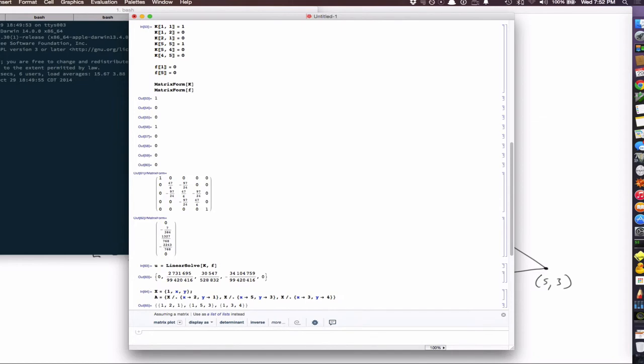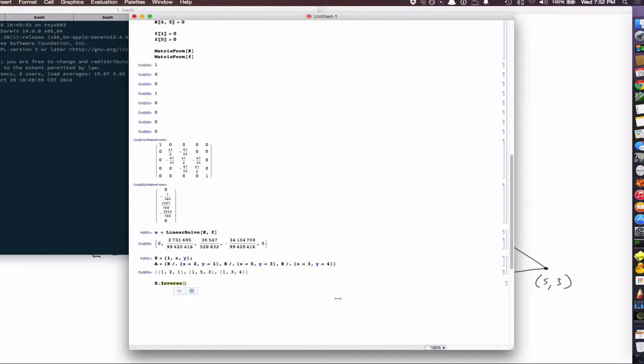And so then we have x dot inverse A. And there are three shape functions for this example.